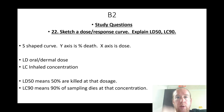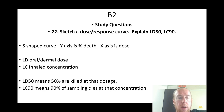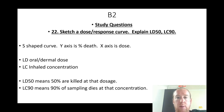Sketch a dose-response curve and explain LD50 and LC90: the curve is S-shaped; the y-axis is death and the x-axis is dose. LD is the oral or dermal dose; LC is the inhaled concentration. LD50 means 50% are killed at that dosage; LC90 means 90% of the sample dies at that concentration.